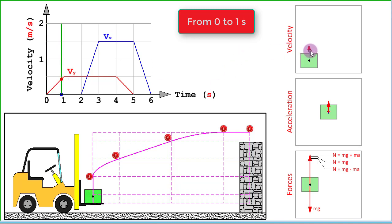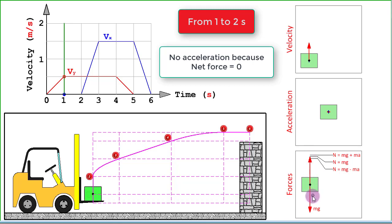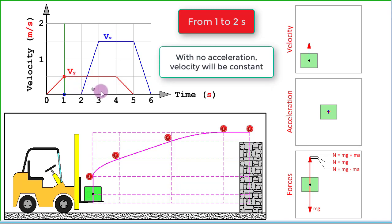This continues for one whole second, and at the end of the first second the acceleration will cease and therefore the force causing it will also vanish. So once again we have equilibrium: the upward normal reaction equals the weight, acceleration has vanished, and therefore the velocity will remain constant. With that steady velocity the block will continue for another second up to the end of two seconds.